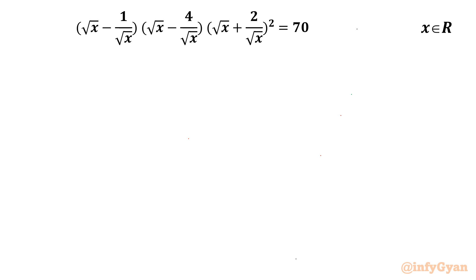Welcome back to Infigyan friends. In this video we are going to solve one very interesting question from radical equations. The given equation is: square root of (x minus 1) over square root x, times (x minus 4) over square root x, times (x plus 2) over square root x, whole square, equals 70. We have to find out the real values of x.